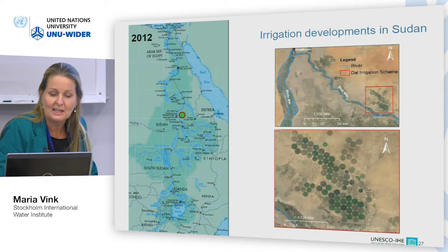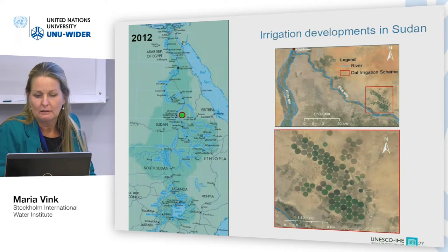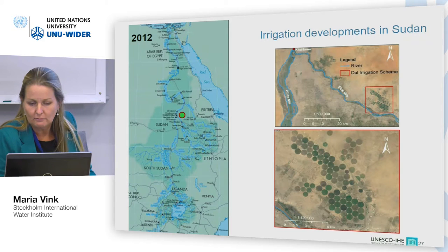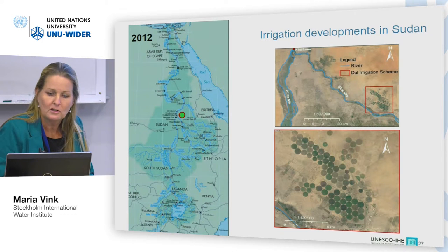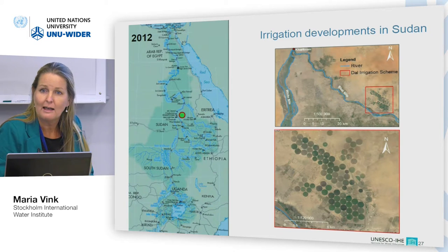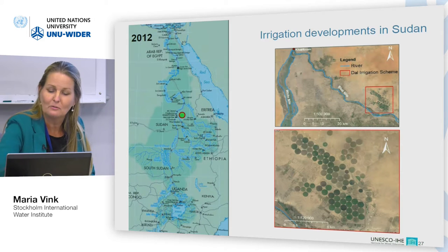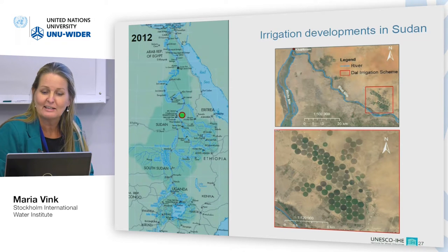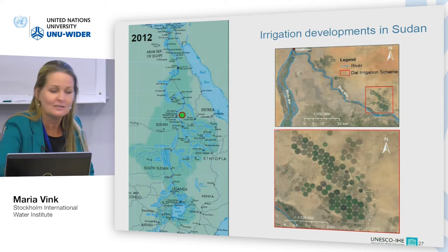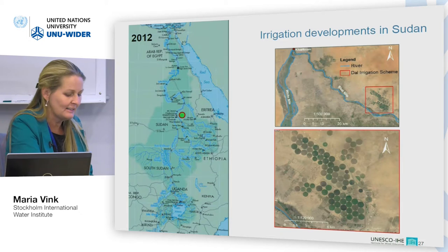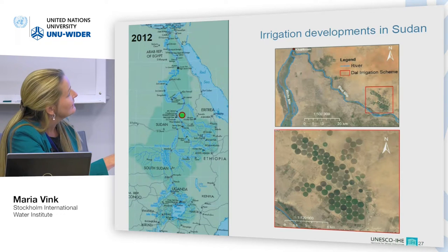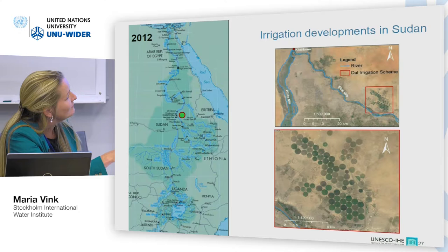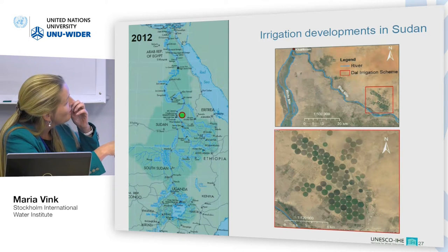Looking at Sudan — if you ever fly over Sudan, you can actually see from the flight these round circles, which are actually irrigation systems. This is expanding more and more, covering quite large areas.